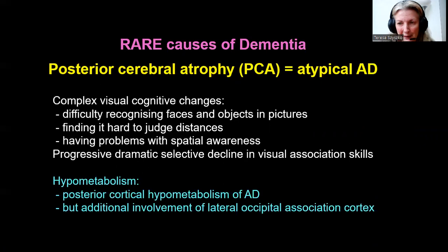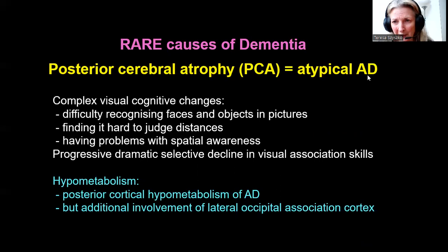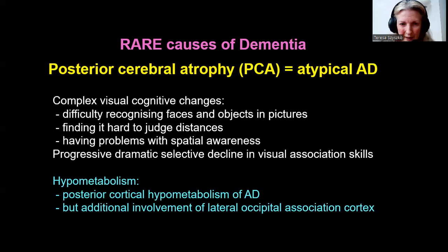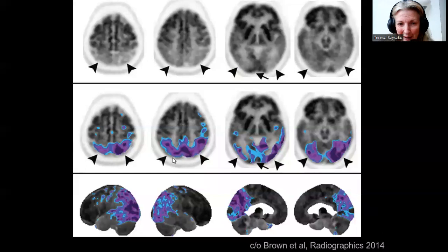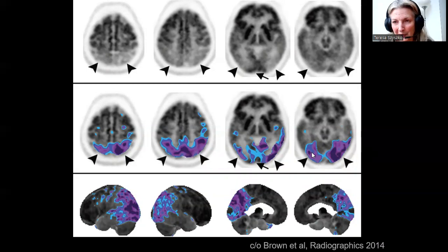There are some rare dementias worth mentioning. Posterior cortical atrophy is the same as atypical Alzheimer's disease, with really extensive posterior hypometabolism — the whole posterior region including the posterior cingulate, occipital lobe, parietal lobes and into the temporal lobes is reduced, but the temporal lobe is less affected than the occipital, parietal lobes and posterior cingulate gyri. Here's an example showing extensive hypometabolism posteriorly affecting the posterior cingulate, parietal and occipital lobes, not as severe in the temporal lobes — that's why it's non-amnesic.